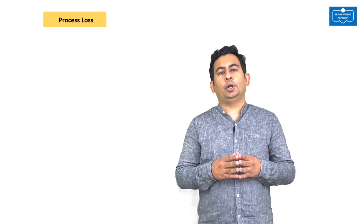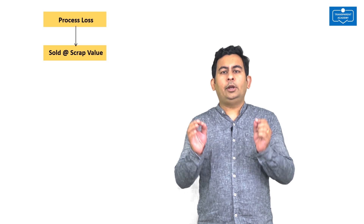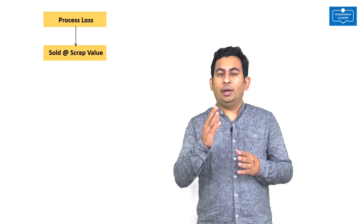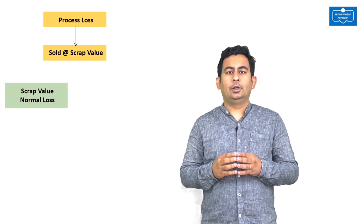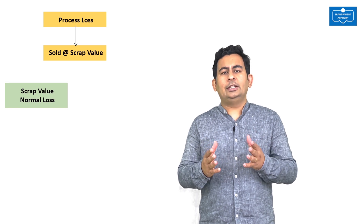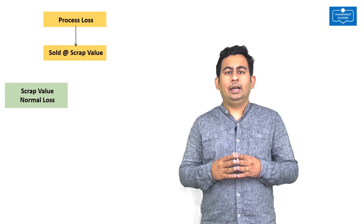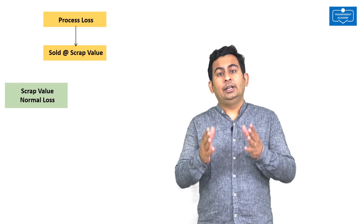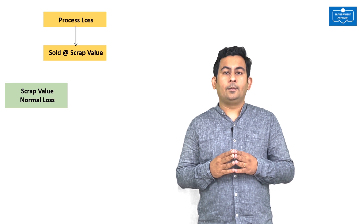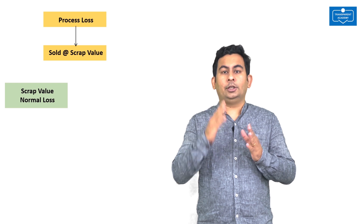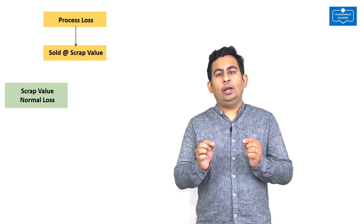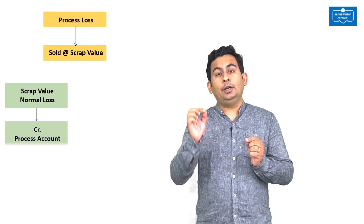Before concluding, there is one more thing to learn about process loss. On many occasions, the units lost in the process can be sold for a scrap value. How do we treat this revenue? The scrap value from the sale of normal loss — since normal loss is an expected loss, the revenue from it is also expected revenue for the process. It reduces the total process cost, so the scrap value from sale of normal loss will be credited to the process account.